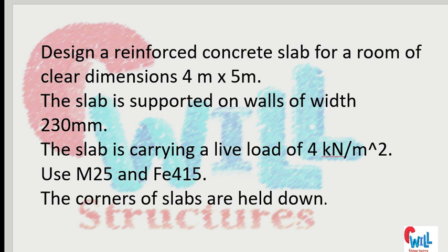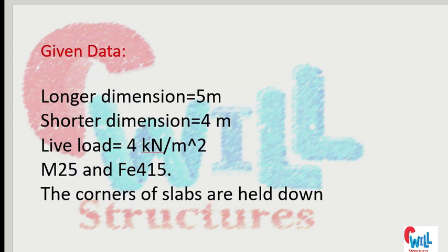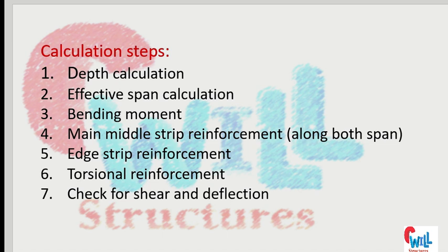The corners of the slabs are held down. For the meaning of corners held down versus not held down, you can search my previous video. The given data: longer dimension of the slab is 5 meter, shorter dimension is 4 meter, live load is 4 kN/m², M25 and Fe415, corners held down. The calculation steps are: depth calculation, effective span calculation, bending moment calculation, main reinforcement for the middle strip along both directions, edge strip reinforcement, torsional reinforcement, shear check, deflection check, and finally the detailing drawing.